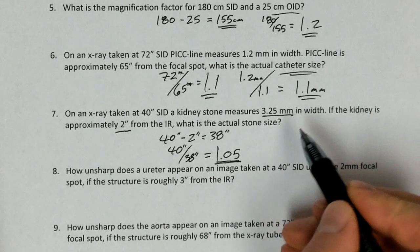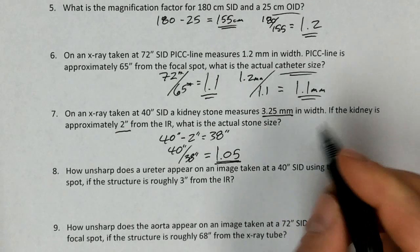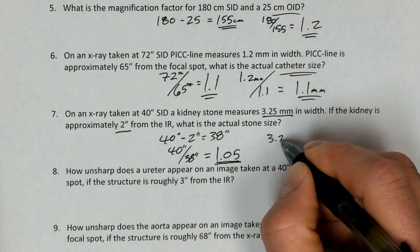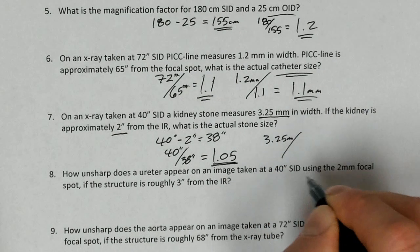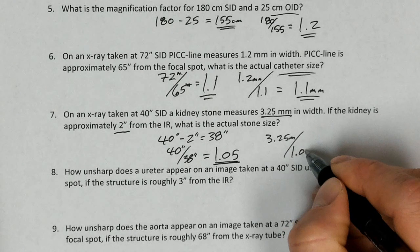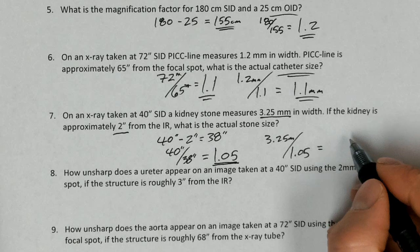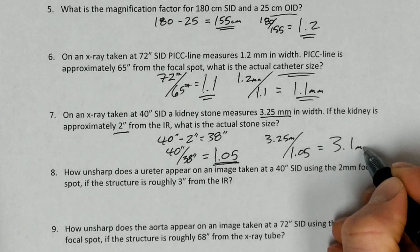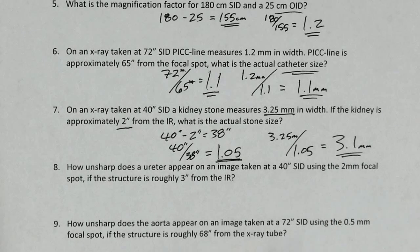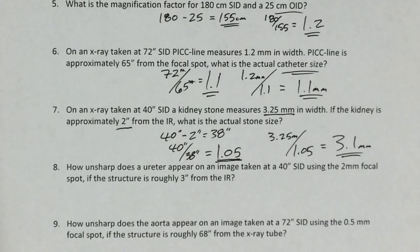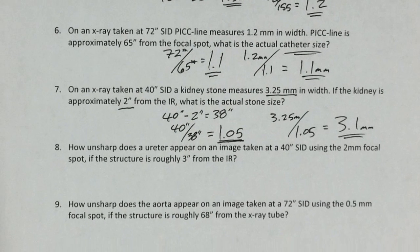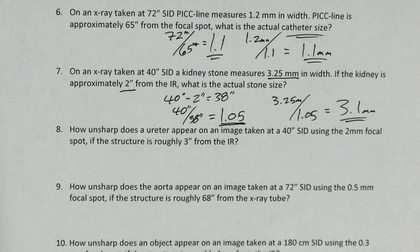So we've been given an image size here. So we're going to take that image size of 3.25 millimeters, and we're going to divide that by the magnification factor. And this will give us the actual object size. The stone is actually 3.1 millimeters. So it's not a major difference, but there is a difference in the size of the actual stone versus the way it's represented on the image.